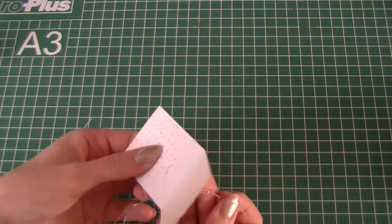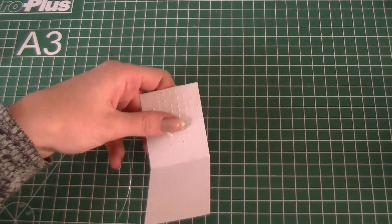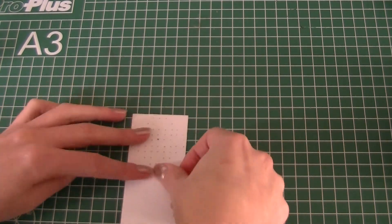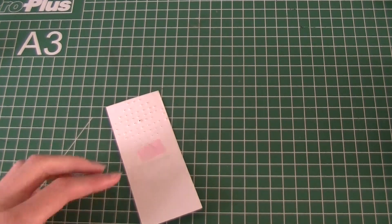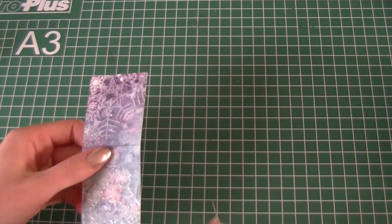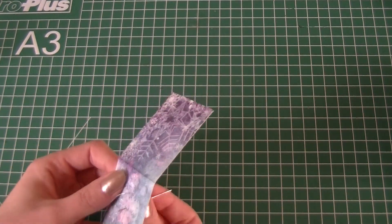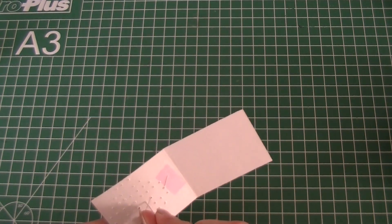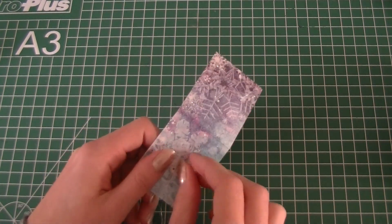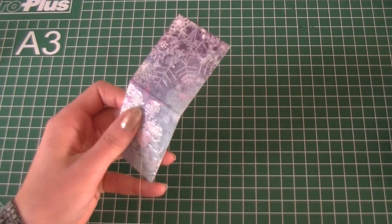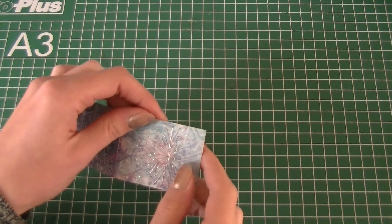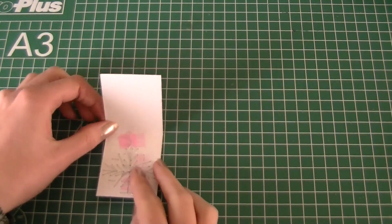For embroidering you can also use a double thread for this design instead of a single one. Use some glue to close the cardboard piece after you finish the snowflake.